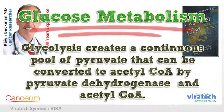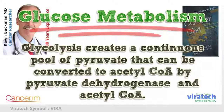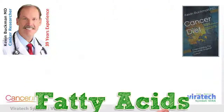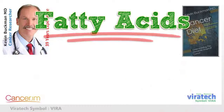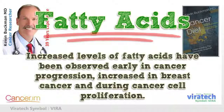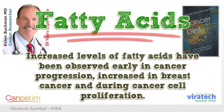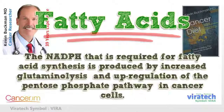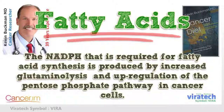Glycolysis creates a continuous pool of pyruvate that can be converted to acetyl-CoA by pyruvate dehydrogenase. Increased levels of fatty acids have been observed early in cancer progression, including increased levels in breast cancer and during cancer cell proliferation. The NADPH required for fatty acid synthesis is produced by increased glutaminolysis and upregulation of the pentose phosphate pathway in cancer cells.